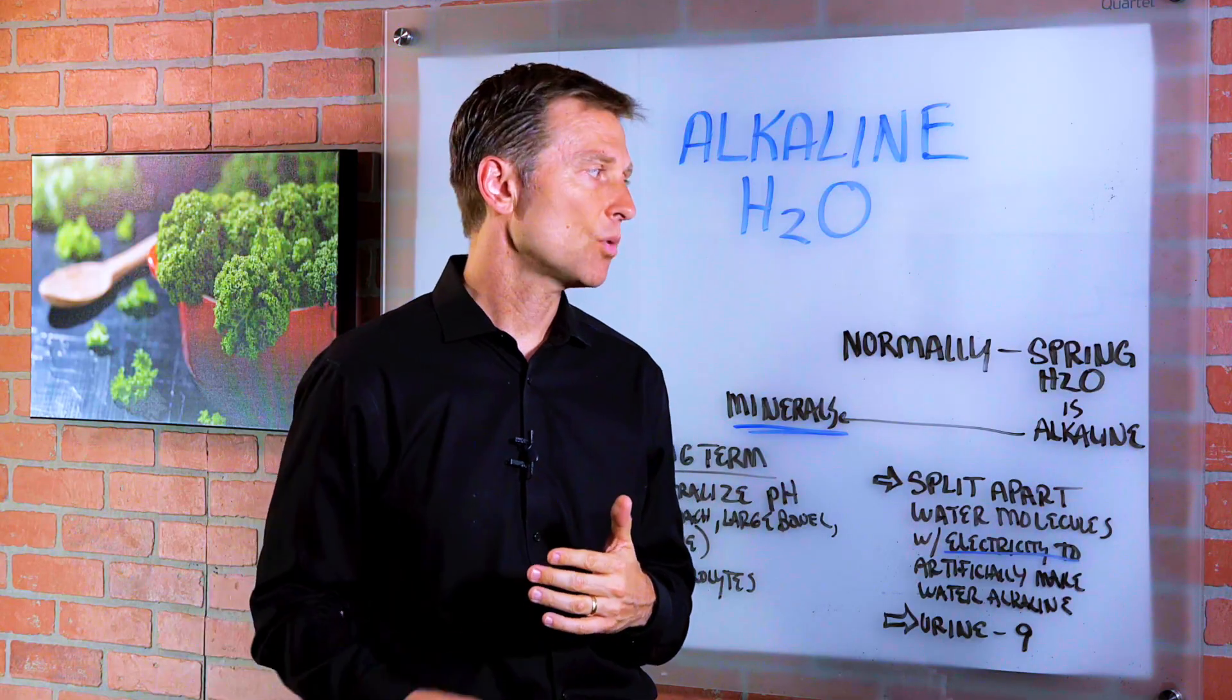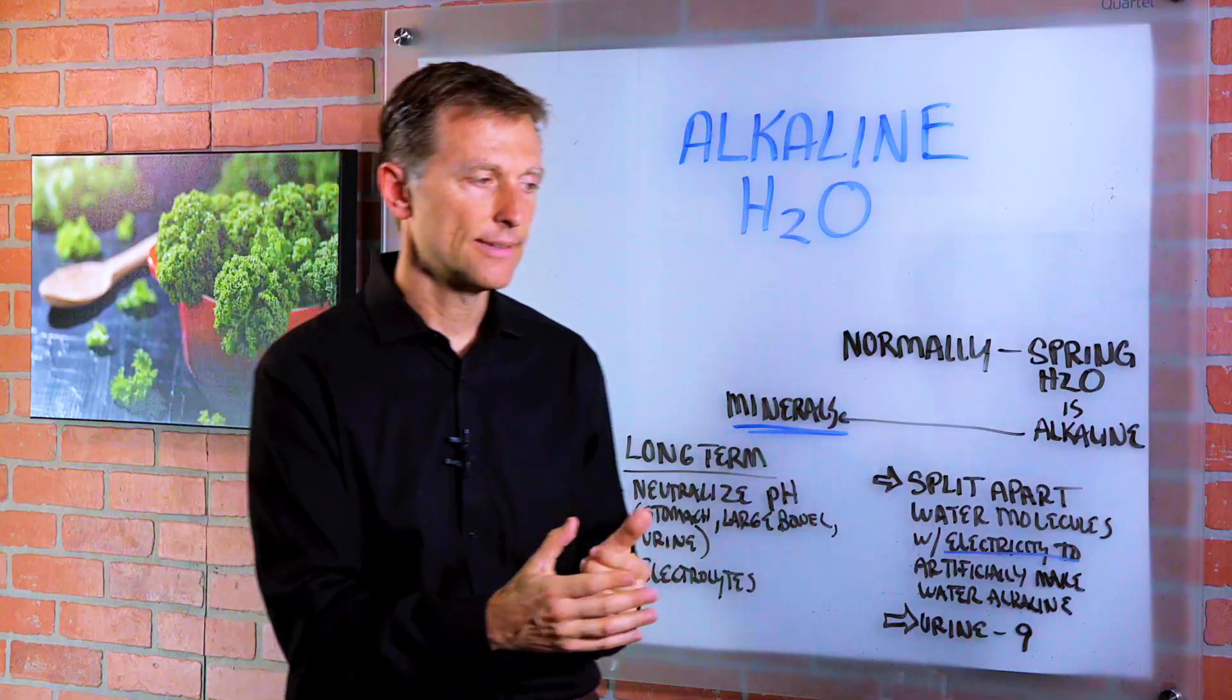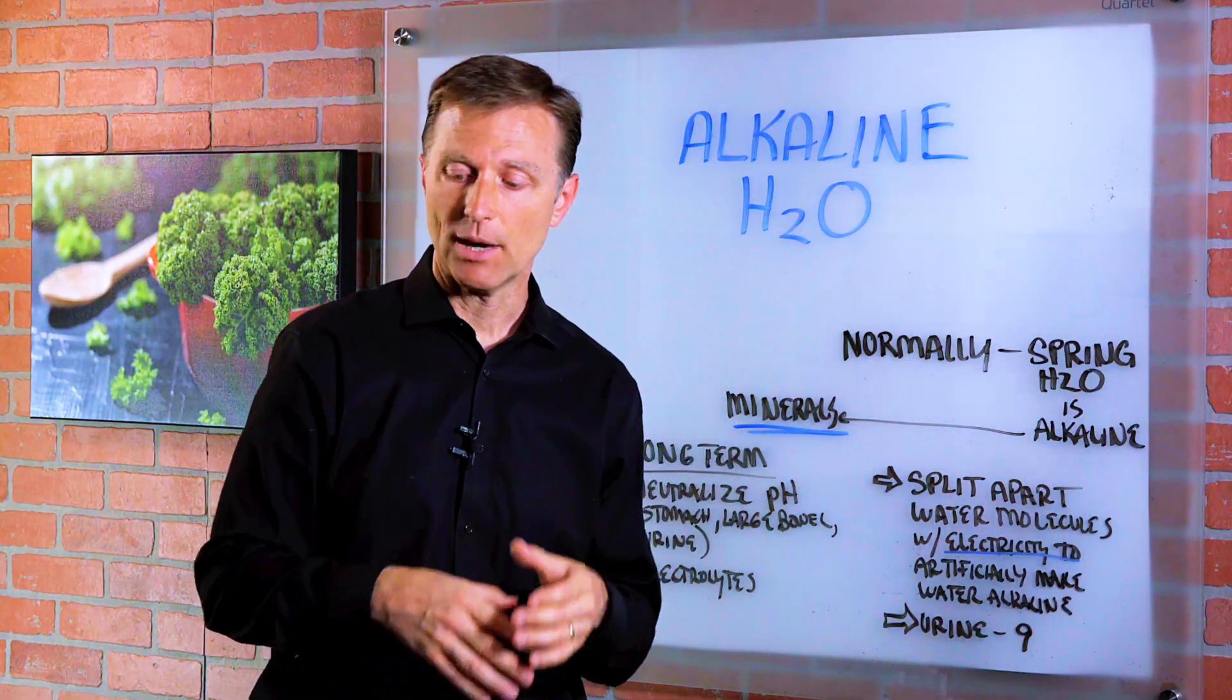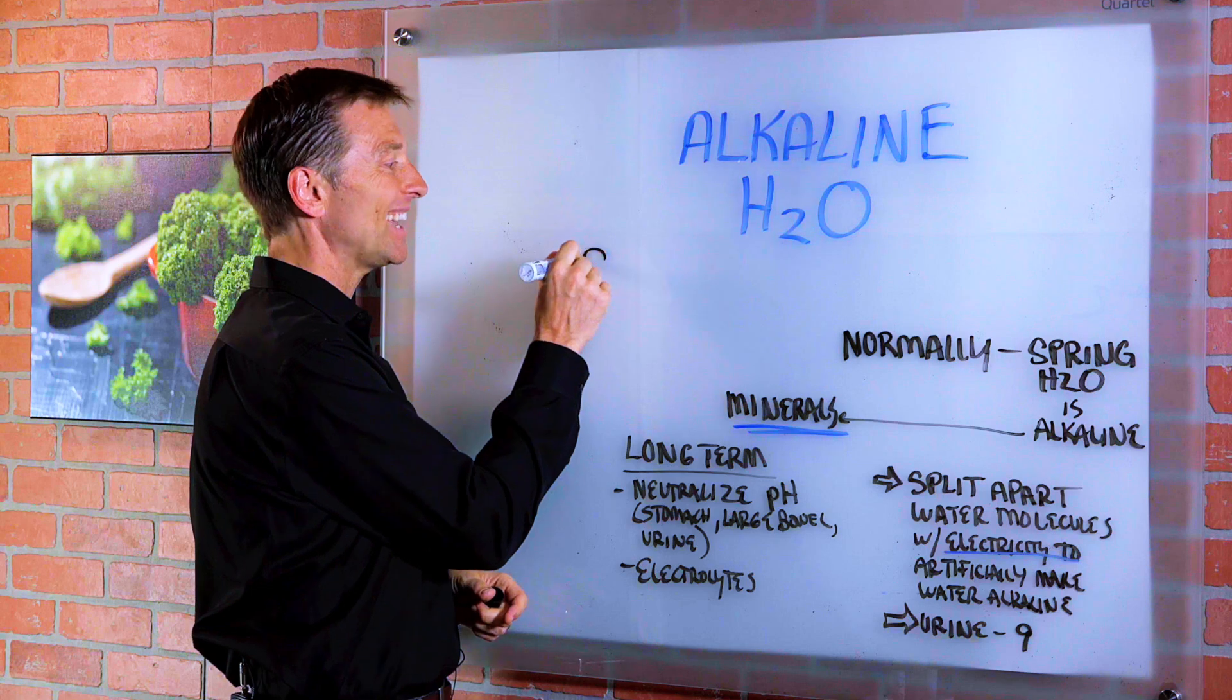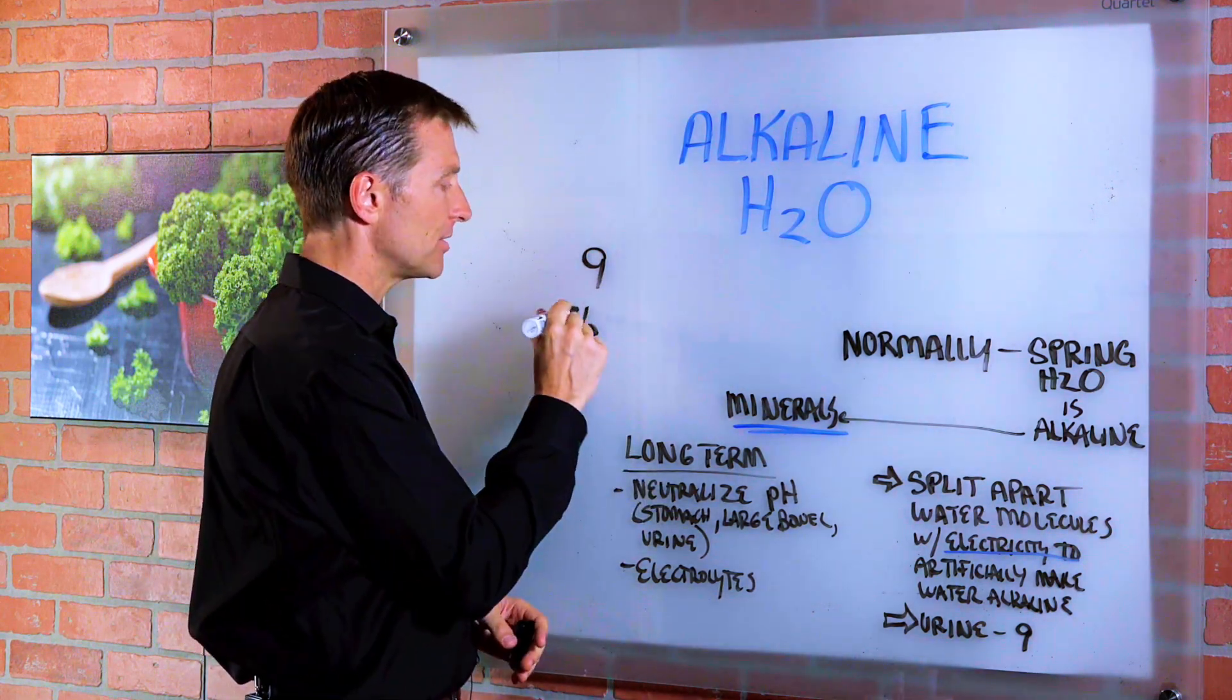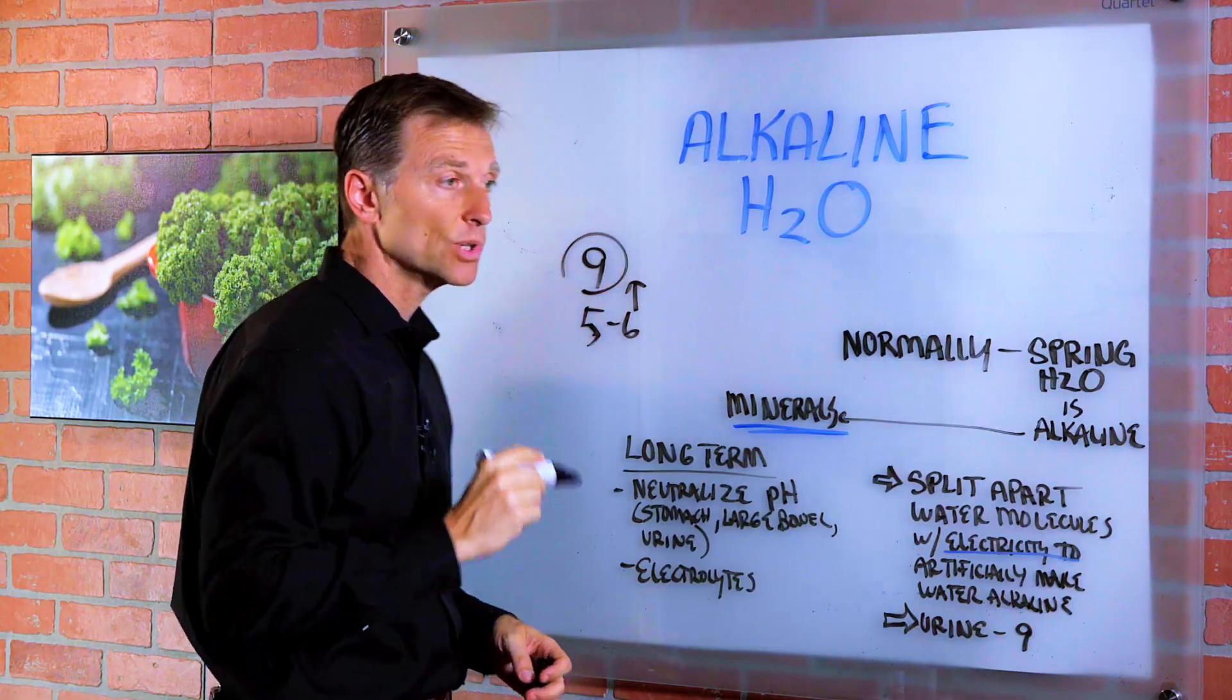In 29 years of practice, I have had quite a few people come in that have used the alkaline water. And I have a machine that measures the pH in the urine, and I would notice that a high percentage of these people would come in with a pH of 9 in the urine. Normally in the urine, it should be 5 or 6, but never this high - 9. 9 is really alkaline.